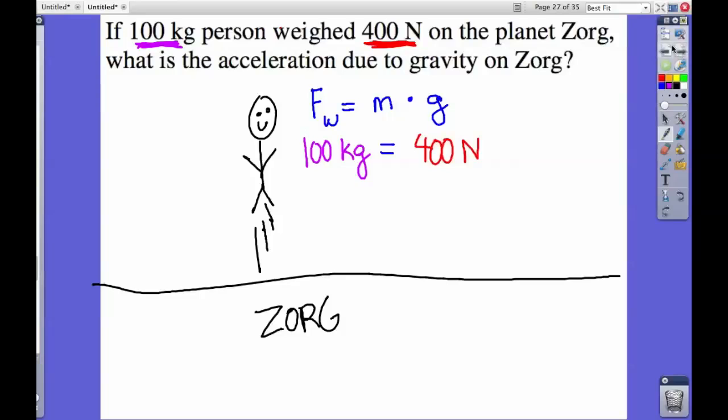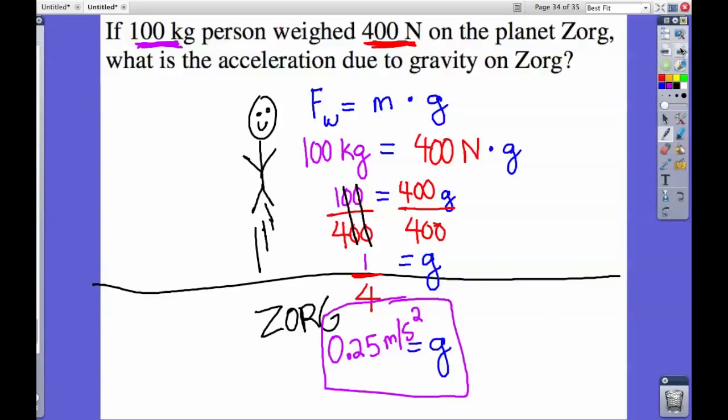For mass, we put in 400 newtons. We're looking for gravity, so we leave it as g. If you're confused by the units, take them out and solve: 100 equals 400g. Divide by 400, cancel the zeros, and you get g equals 1 over 4. 1 divided by 4 equals 0.25. So the gravity on Zorg is 0.25 meters per second squared.